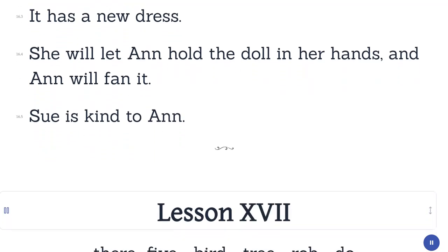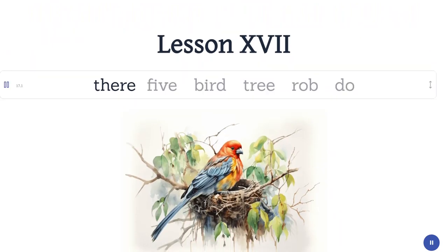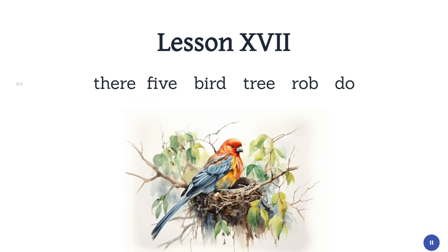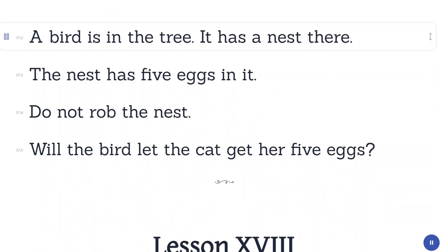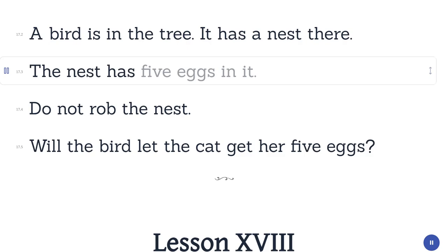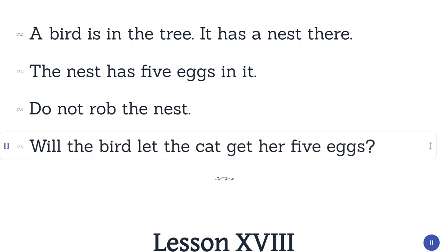Lesson 17. There. Five. Bird. Tree. Rob. Do. A bird is in the tree. It has a nest there. The nest has five eggs in it. Do not rob the nest. Will the bird let the cat get her five eggs?